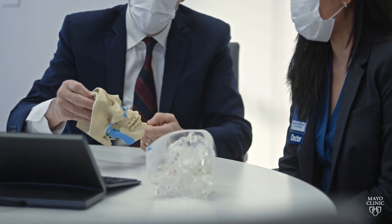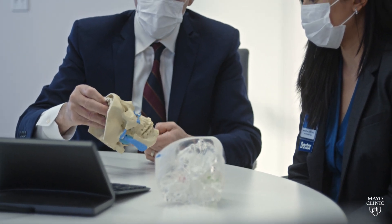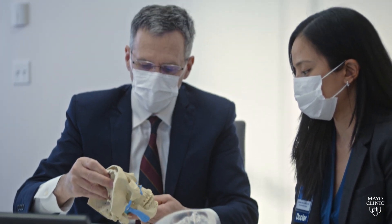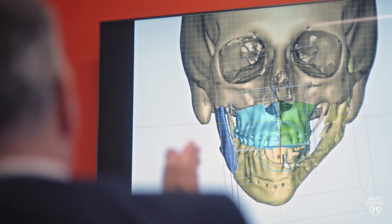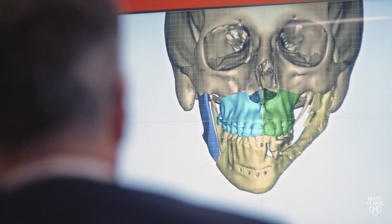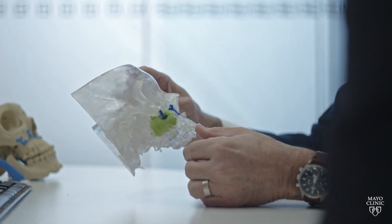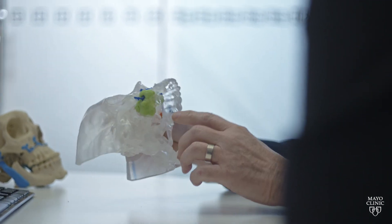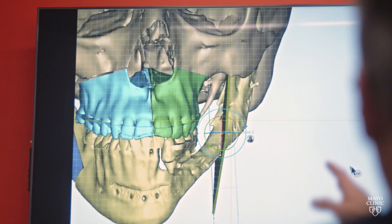Jaw surgery for sleep apnea is a process where a patient will have the upper jaw and then the lower jaw advanced — meaning we bring both jaws usually forward. The upper jaw is segmented from the skull base and brought forward, and then the lower jaw we cut into a couple of pieces and bring that forward.